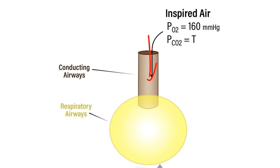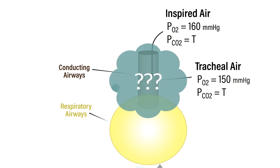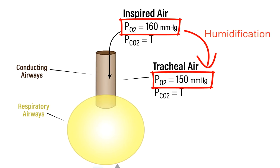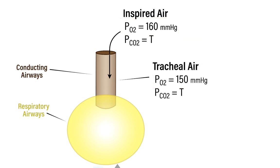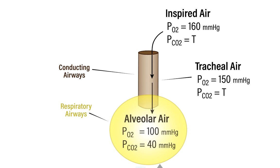During inspiration, this atmospheric air first moves into the upper respiratory tract and then into the conducting airways within the lungs. Right away, we observe that the partial pressure of oxygen drops from 160 to 150 millimeters of mercury. This occurs due to the humidification of the air in the upper respiratory tract and conducting airways. As the inspired air is humidified, the other constituents — chiefly nitrogen and oxygen — are diluted by a small amount. Carbon dioxide is also diluted slightly, but because there's only a tiny amount present, there's still only a trace amount of CO2 in this tracheal air.